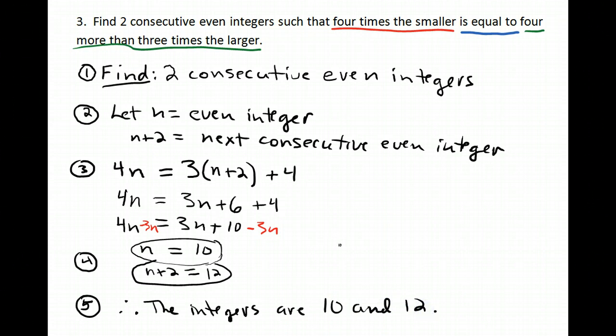Now, before you leave this problem, please always make sure that your answer actually makes sense. If you had gotten n equals 11 or n equals 4 fifths, that would be an indication that you made a mistake somewhere, because you're supposed to get consecutive even integers. So, if you got something that's not an even integer, then go back and take a look. Always make sure that your answer makes sense.